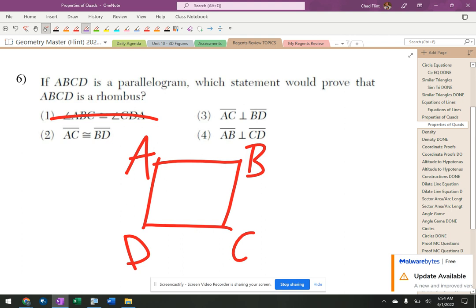AC congruent to BD - that's the diagonals are equal. That is a rectangle, okay. AC perpendicular to BD.